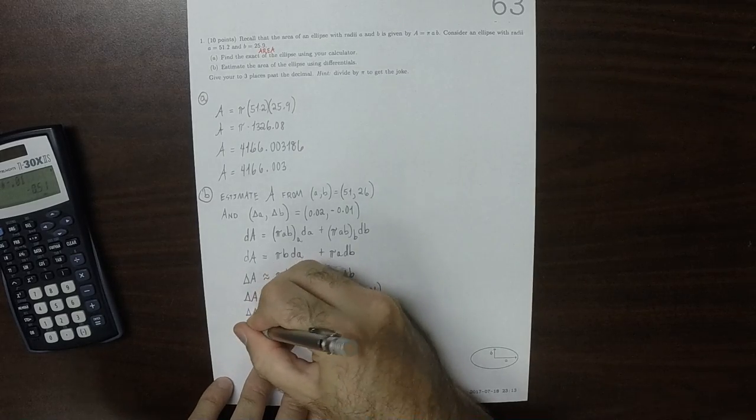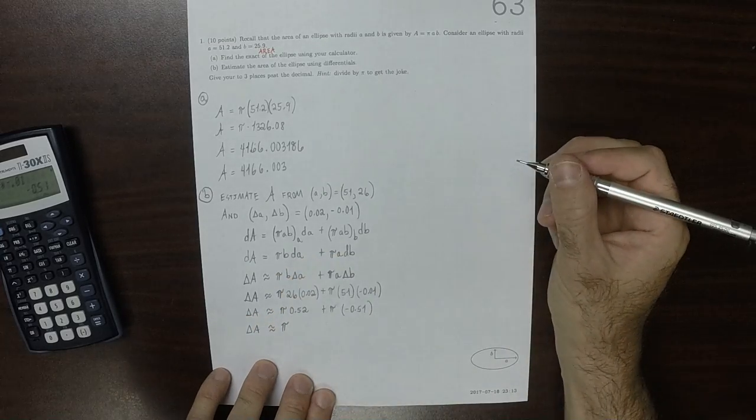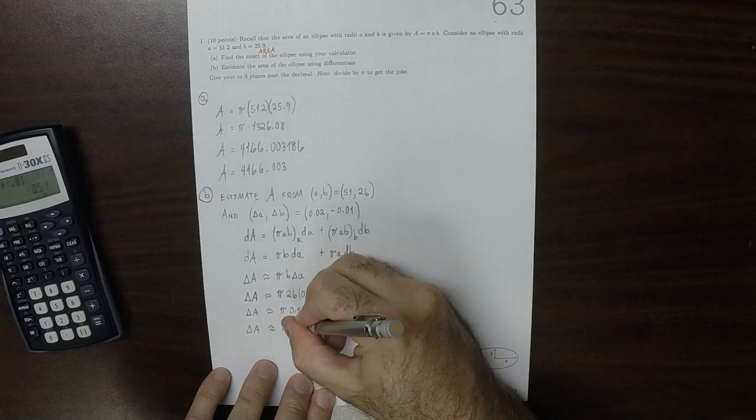Adding these together, ΔA is approximately π times 0.01.